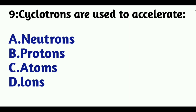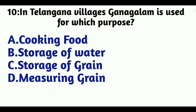Question 9: Cyclotrons are used to accelerate — Option A: Neutrons, Option B: Protons, Option C: Atoms, Option D: Ions. The answer is Option B, Protons.